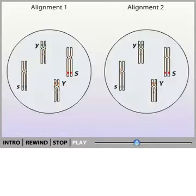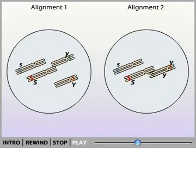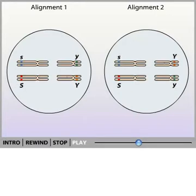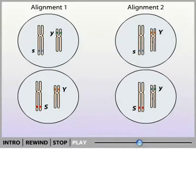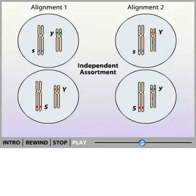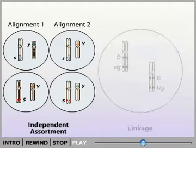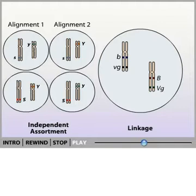During meiosis, chromosome pairs line up at the midplane of the cell. When genes are located on different chromosomes, random chance determines which alleles line up and are transmitted together to the germ cell. This is why the traits observed by Mendel appear to be inherited independently of each other. When genes are located on the same chromosome, they do not line up randomly during meiosis.